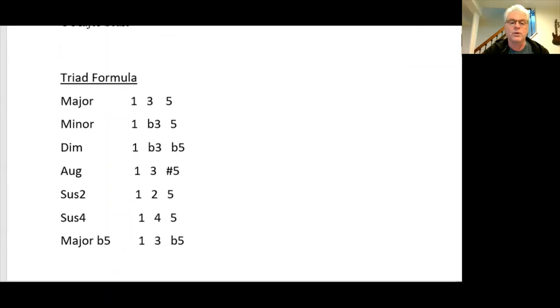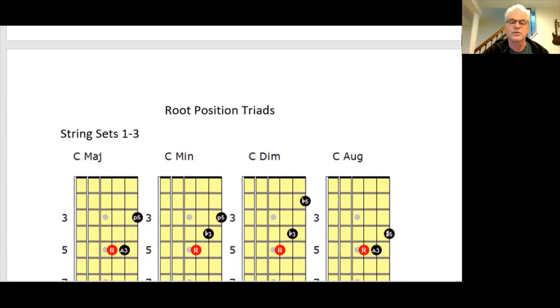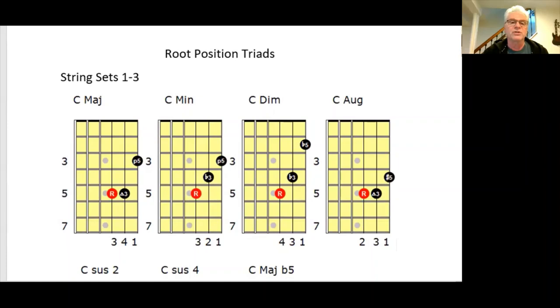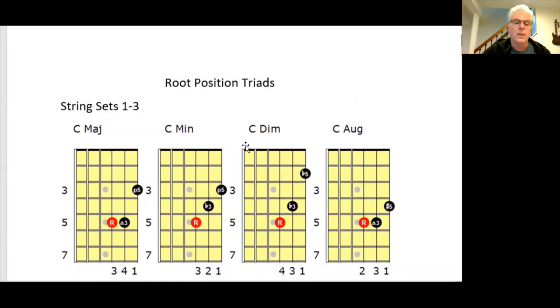Let's talk about the root position major triad. Root position major triad with string sets one through three. So if this is our C note, it's our root. So that's our root, third, and fifth. You would use your third, fourth, and first finger.